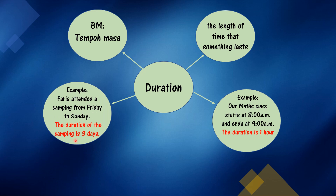Another example: Faris attended a camping from Friday to Sunday. Faris menghadiri satu camping dari Jumaat hingga Ahad. So, the duration of the camping is 3 days. Tempoh masa, 3 hari. 3 days.